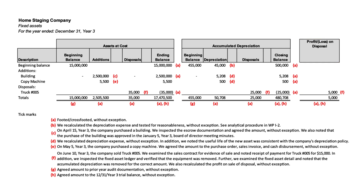Let's start working our way through tick marks. First, A — footed, cross-footed. That just means they're checking the math, and you'll see A's scattered all over this chart for a number of the different totals at the bottom as well as some of the sums added across. So anywhere you see that letter A, it's the most prevalent tick mark noted — that's where we had to recheck the math.